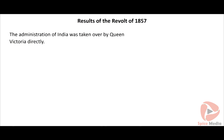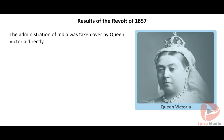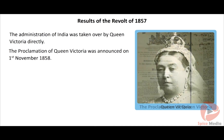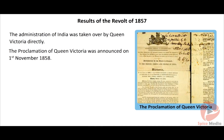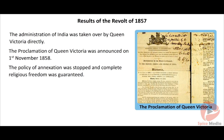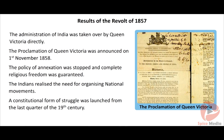The rule of the English East India Company ended in India, and the administration of India was taken over directly by Queen Victoria. The proclamation of Queen Victoria was announced on 1st November 1858. The Governor-General of India now came to be called the Viceroy of India. The policy of annexation was stopped and complete religious freedom was guaranteed. The Indians realized the need for organizing national movements and political organizations based on national consciousness, and a constitutional form of struggle was launched from the last quarter of the 19th century.